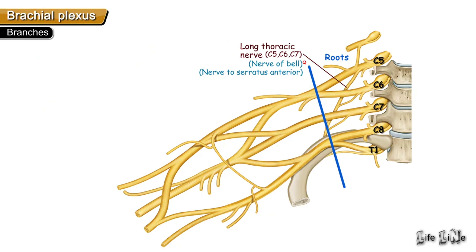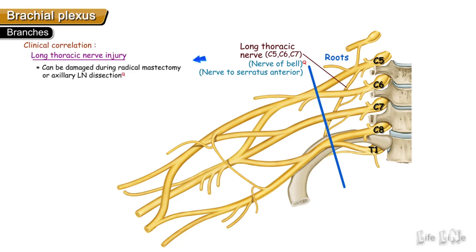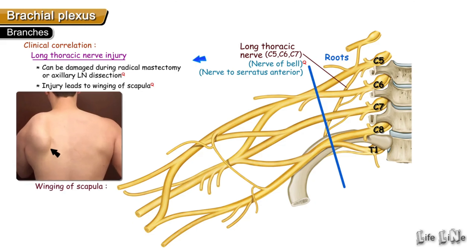An important point about the long thoracic nerve is that it can be damaged during radical mastectomy or axillary lymph node dissection. Damage to this nerve leads to winging of the scapula — a condition where the scapula fails to move forward; instead, the medial border of the scapula goes backward and becomes prominent.